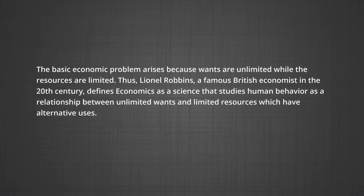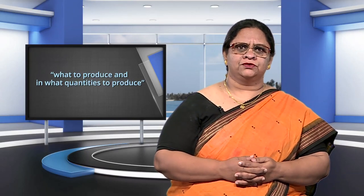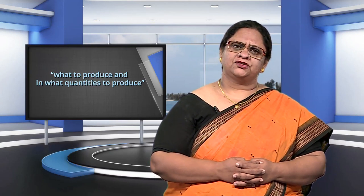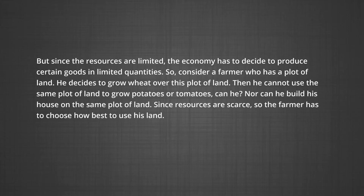Basic problems arise because human wants are unlimited and resources are limited. Thus, Lionel Robbins, the famous British economist in the early 20th century, defined economics as a science that studies human behavior as a relationship between unlimited wants and limited resources which have alternative uses. The limits on resources and their alternative uses gives rise to the problem of what to produce and in what quantities to produce. If resources were unlimited, the problem of what to produce or in what quantities would not arise, because the economy would be able to produce everything that everyone wants in whatever quantities they wanted. But since resources are limited, the economy has to decide to produce certain commodities in limited quantities.